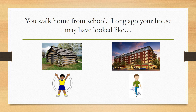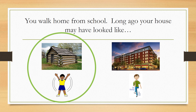Let's try another. You walk home from school. Long ago your house may have looked like... If you think it would have looked like the first picture long ago, do jumping jacks. If you think it may have looked like the second picture long ago, do cross crawls. Your house from long ago may have looked like that first picture — you should be doing jumping jacks. If you take a look at the second picture, I see a lot of lights that use electricity. In fact, if you look really close, you can see cars. Remember, cars hadn't been invented long ago either.